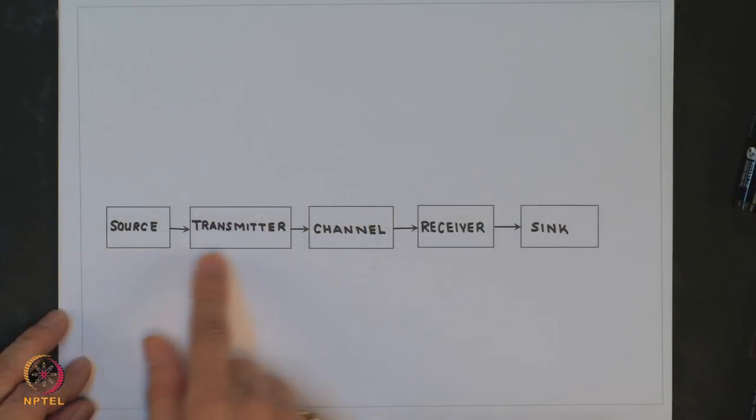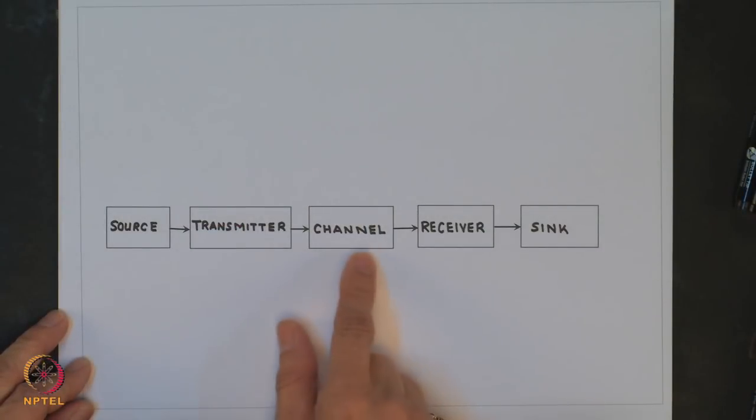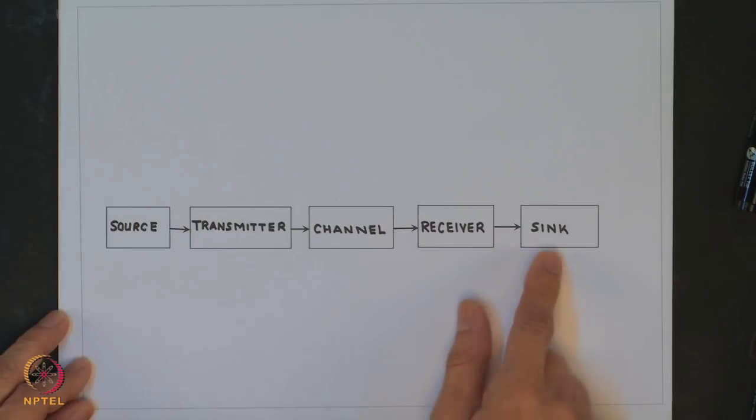A communication system, either analog or digital, is represented by the general block diagram as shown in the figure. We have a source, transmitter, channel, receiver, and the destination or the recipient or the sink.